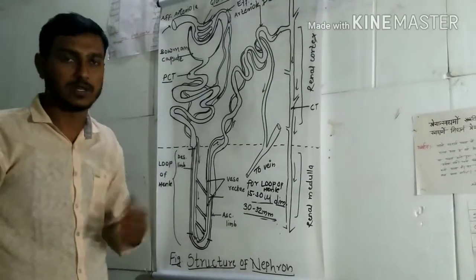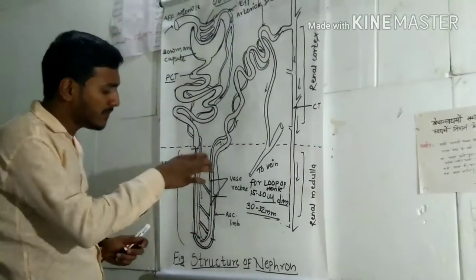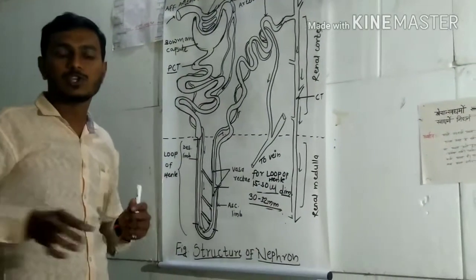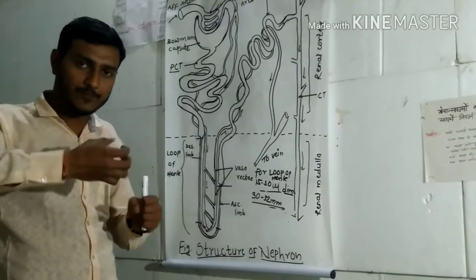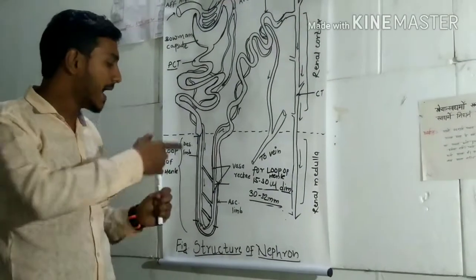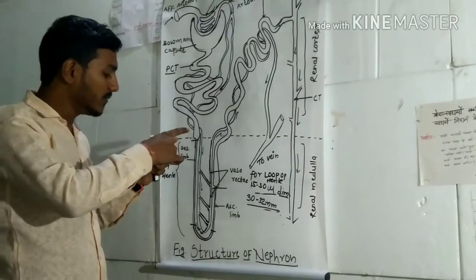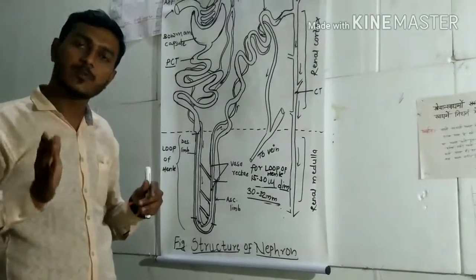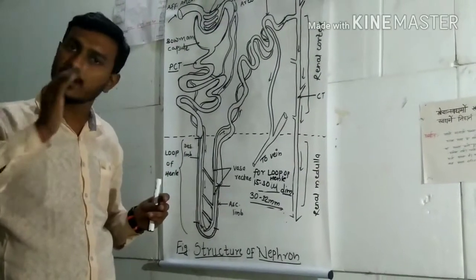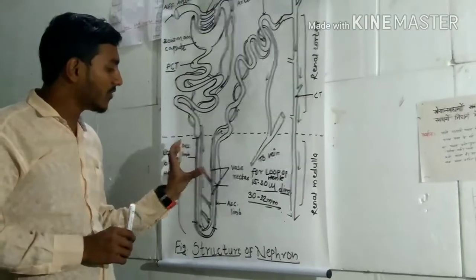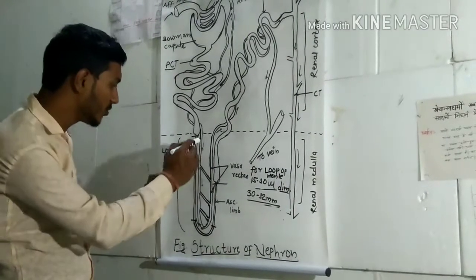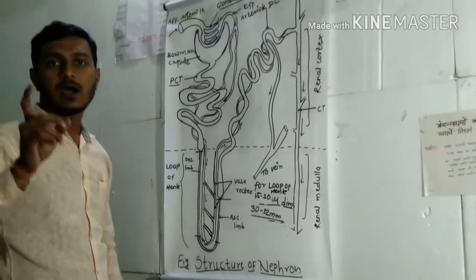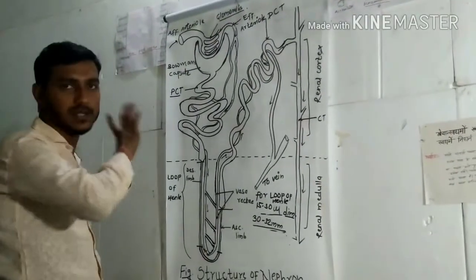Animals living in the desert — such as camels and rats — contain a larger loop of Henle compared to other mammals living in other areas. The concentration of urine is directly proportional to the length of the loop of Henle: the longer the loop, the more water is absorbed, making the urine more concentrated. The function of the PCT is active absorption of materials from the filtrate.